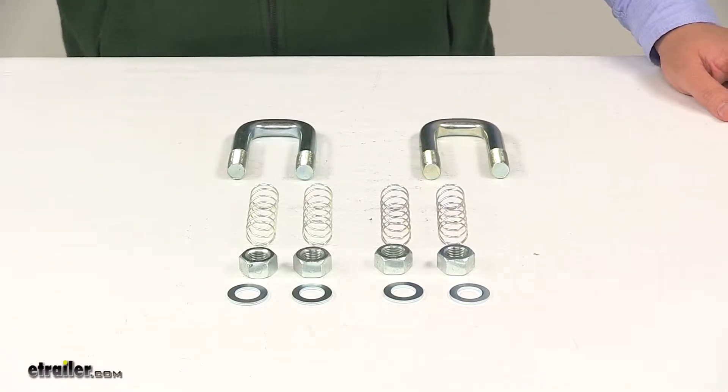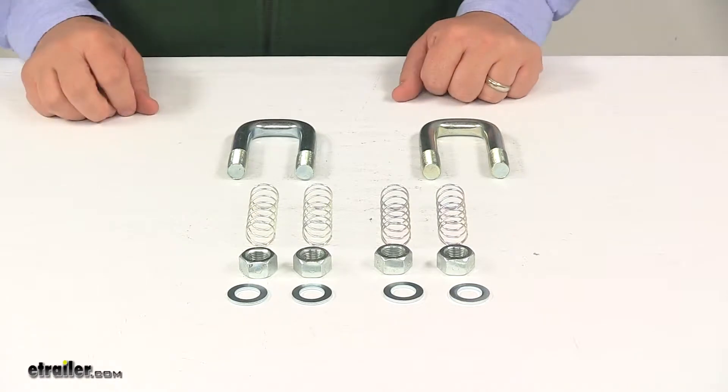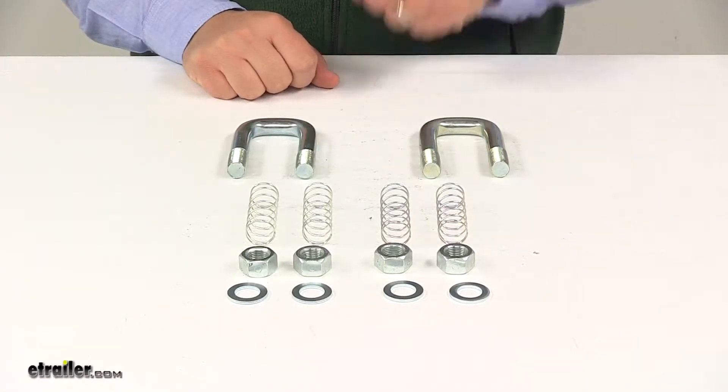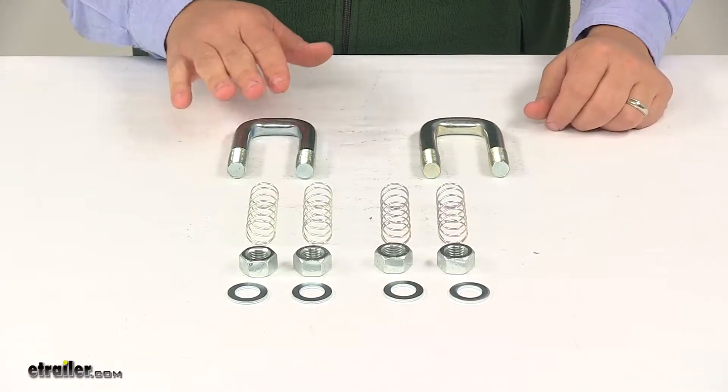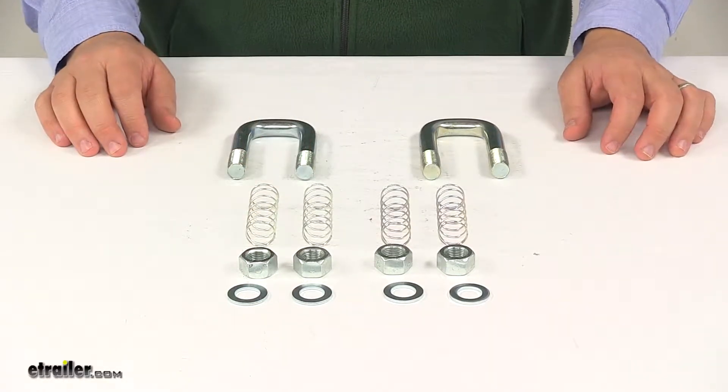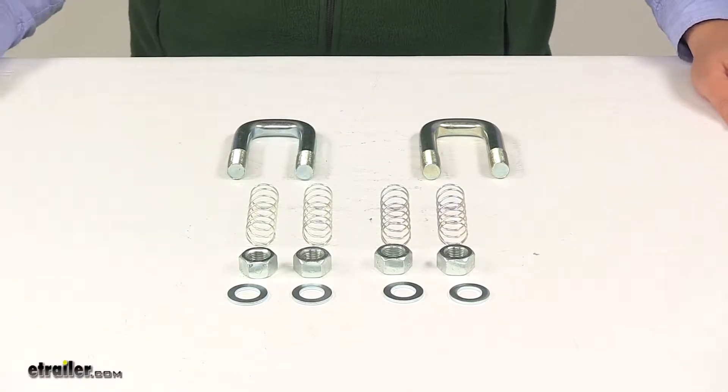Today we're taking a look at the replacement safety chain U-bolt kit for Kurt Quick Goose 2 Gooseneck Hitch. This replacement kit replaces the U-bolts, the springs, and the hardware for safety chain attachment to the Kurt Quick Goose 2 Hitch.